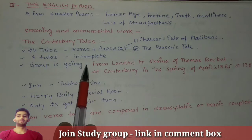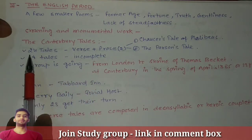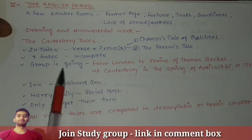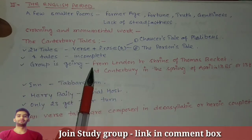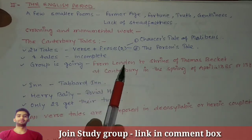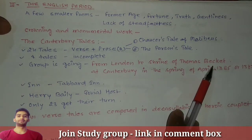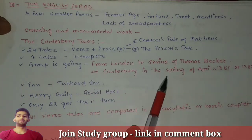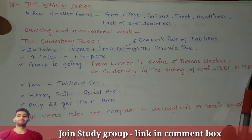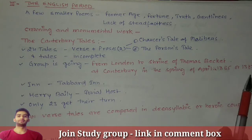Four tales are incomplete, so we know that 20 tales are completed. The whole group is going from London to the Shrine of Thomas Becket at Canterbury, in the spring of April, in 1385 or between 1385 to 1387.